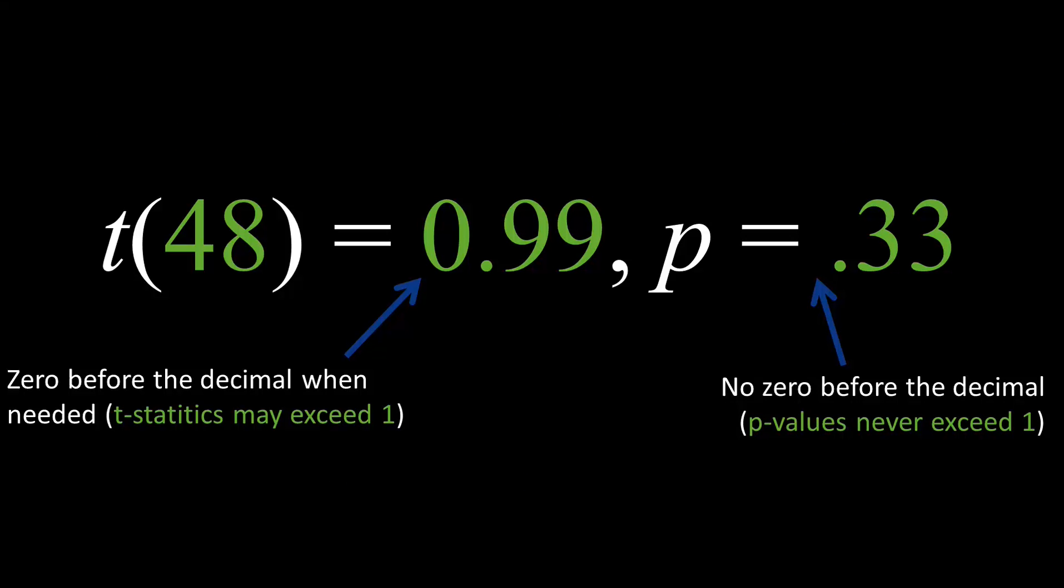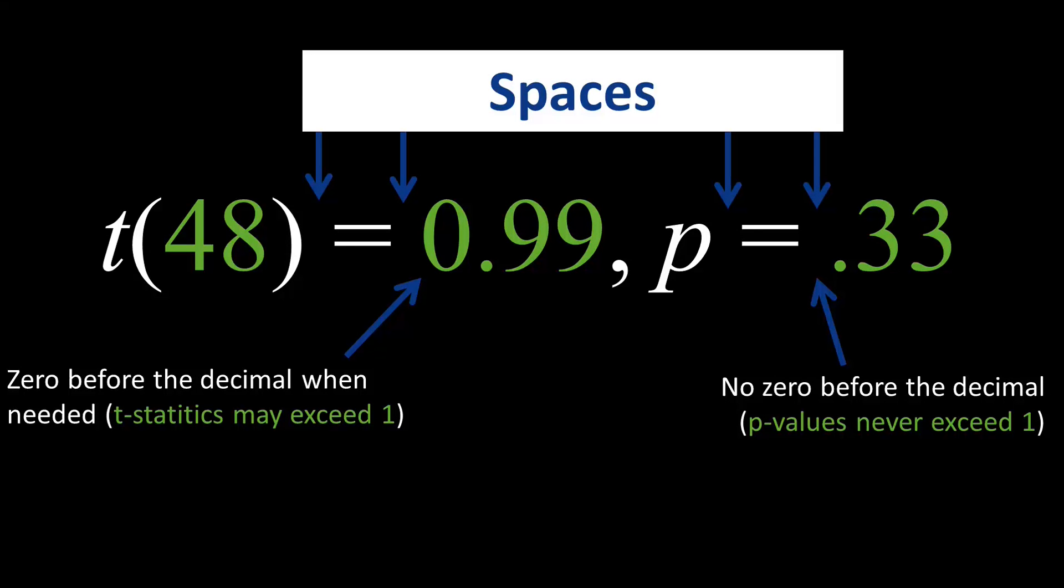However, no zero is placed before the decimal in the p-value because a probability never exceeds 1. And be sure to include spaces before and after the equal sign to ensure the information is readable.